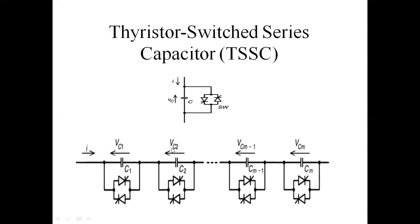This is N number of capacitors connected in series, and each capacitor is connected to anti-parallel thyristors. The voltages are VC1, VC2, up to VC(M-1) and VCM. C1 is capacitor 1, C2 is capacitor 2. VC1 is the Voltage Across Capacitor 1 and VC2 is the Voltage Across Capacitor 2. One thyristor controls the positive half cycle, and the second controls the negative half cycle. This is the simple circuit with a single thyristor, single capacitor, and two anti-parallel thyristors — representing more capacitors connected in series.